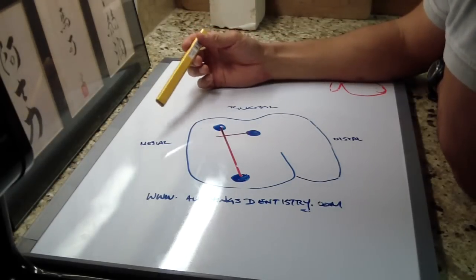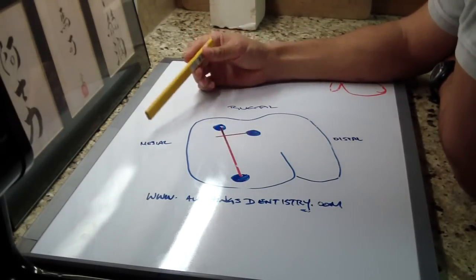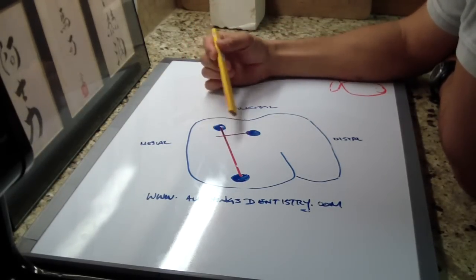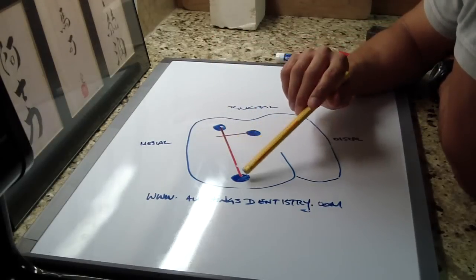So let me orient you to this tooth. Maxillary molar, your buccal, mesial, and distal. This is your MB1 canal, distal buccal canal, and palatal canal.